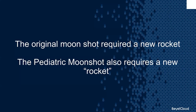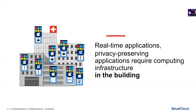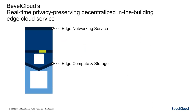The original moonshot required a new rocket, and we believe this will also require a new rocket. We believe that real-time, privacy-preserving applications require computing infrastructure that is in the building. So we decided to engineer a real-time, privacy-preserving, decentralized in-building edge cloud service. Why do I call it an edge cloud? AWS: Amazon buys a bunch of computers, manages performance, availability, and security, delivers them in an OPEX model, and puts them in about 10 data centers on the planet.